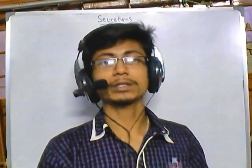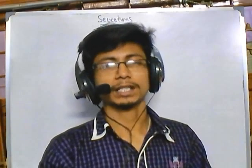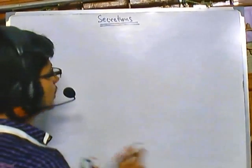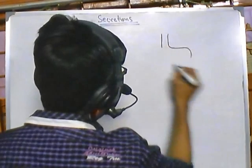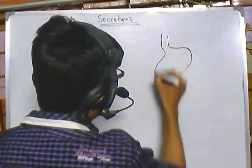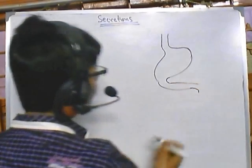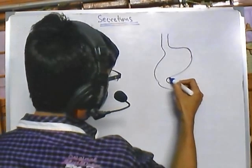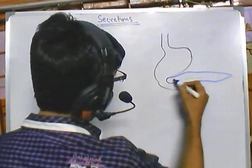Welcome back. We are talking about secretions in the digestive system and the importance of different secretory molecules. In this video we will be talking about secretions coming from two major secretory glands: one is pancreas, another one is liver. Both of these glands play a vital role in providing secretory molecules. Before going into the discussion, let me draw a picture showing the stomach and the duodenum, with the pancreas aligned nearby.